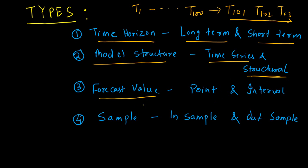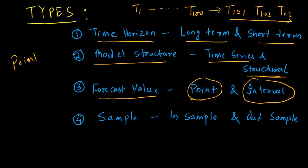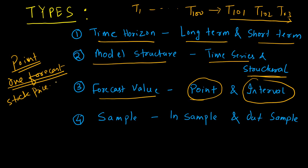Another way to classify forecasting models is by forecast value — what exactly you want to forecast. There are two types: point forecast and interval forecast. In point forecast, you simply want one value to be forecasted — for example, the stock price for a particular period, or revenue for a particular period in the future. That's a point forecast — you simply want one exact value.